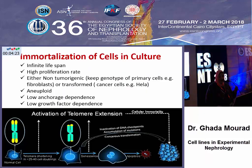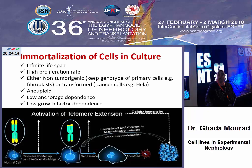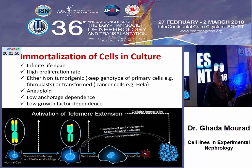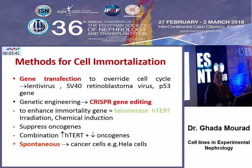By immortalization, we mean that we enhance the elongation of the telomere — a part of the DNA — so that the cell cycle would continuously go on without the cell going into senescence. These immortalized cells are not necessarily carcinogenic. Some normal cells could be brought into immortalization, but they have an infinite capacity for proliferation, low anchorage dependence, and can grow without growth factors.